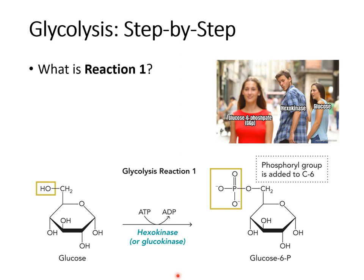Reaction 1 is the hexokinase step. Hexokinase works via an induced fit mechanism and converts glucose to glucose-6-phosphate. This is a phosphorylation reaction — a kinase adds a phosphoryl group to glucose. That phosphoryl group comes from ATP, so this step uses ATP. This is why the first half of glycolysis is called ATP investment: we must use some ATP now to eventually produce ATP later.